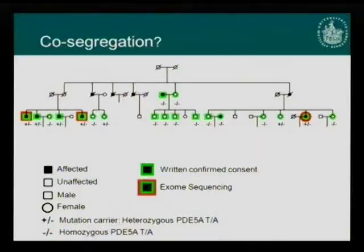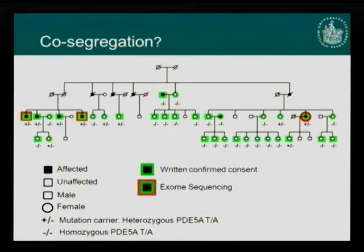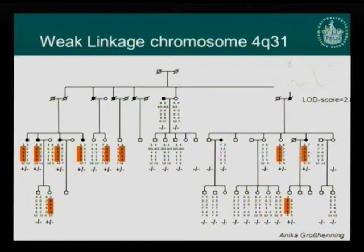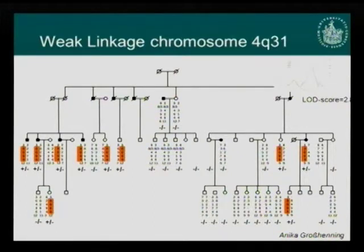Looking at the co-segregation in this family, again showing only members above age 60, all affected family members carry the variant, in addition to some healthy ones. In the younger generation, none are affected so far but there are some mutation carriers. Notably, the linkage results from years ago show that all mutation carriers also have the linkage region. Since we didn't use these linkage results in our analysis, and the variant lies just outside the linkage region, this actually supports the hypothesis that we have found the causative variant.